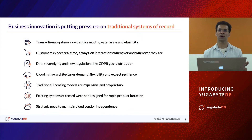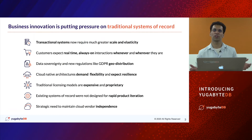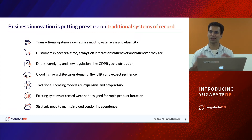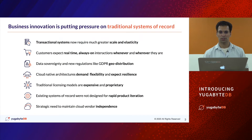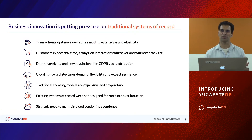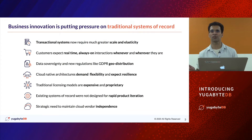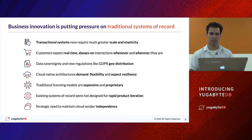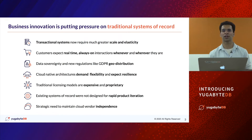Cloud-native architectures, as people are moving towards them, demand flexibility because failures are the norm and expect resilience. Traditional licensing models to get all of this accomplished get very expensive, represent lock-in, and are proprietary. Existing systems of record were also not designed for the rapid iteration required in a cloud-native application, and there's a strategic need for enterprises to maintain cloud vendor independence.